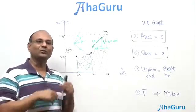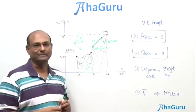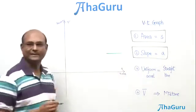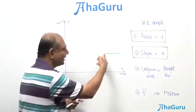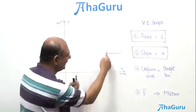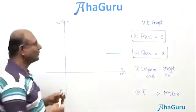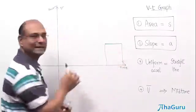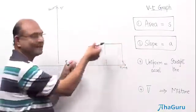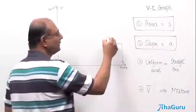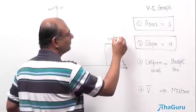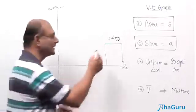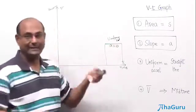Now let us look at how to use VT graphs for uniform motion or uniformly accelerated motion. If the graph is a flat horizontal line, it means the velocity has not changed — as time changes, velocity remains constant. This is uniform motion with uniform velocity. The acceleration is equal to zero — it is constant but in the special case it is zero.